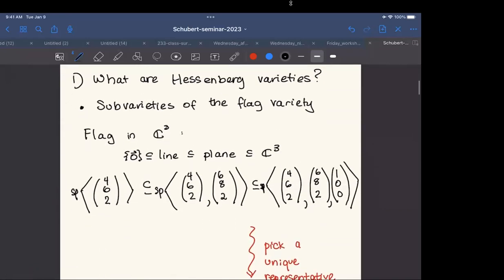I'm going to start by situating Hessenberg varieties very concretely. They are subvarieties of the flag variety. For me, for today, everything is in GLN. Everything that I draw will be in C3 actually.